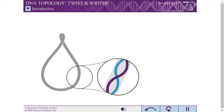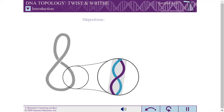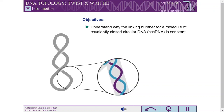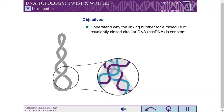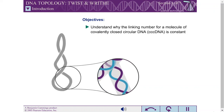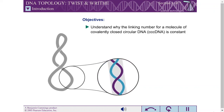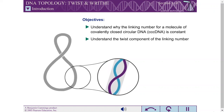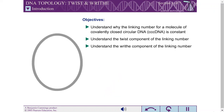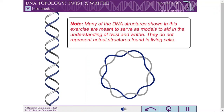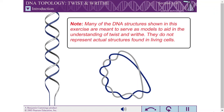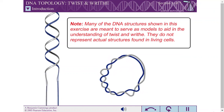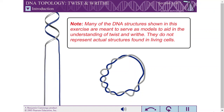DNA topology describes the coiling of a molecule of DNA. When you have completed this exercise, you should understand why the linking number for a molecule of covalently closed circular DNA, or CCC DNA, is constant. Note: many of the DNA structures shown in this exercise are meant to serve as models to aid in the understanding of twist and writhe. They do not represent actual structures found in living cells.